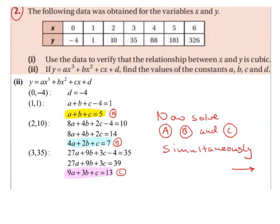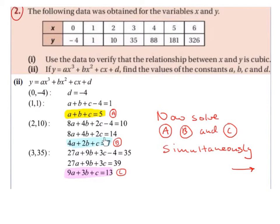Substituting the point (2, 10) into the equation with d = −4: a×2³ + b×2² + c×2 − 4 = 10, giving 8a + 4b + 2c − 4 = 10. Bringing the −4 over gives 8a + 4b + 2c = 14. Dividing across by 2 gives 4a + 2b + c = 7. So we now have a second equation in terms of a, b, and c.